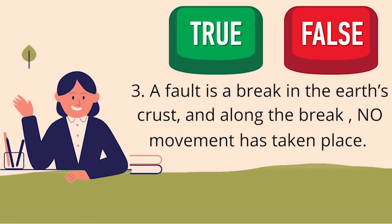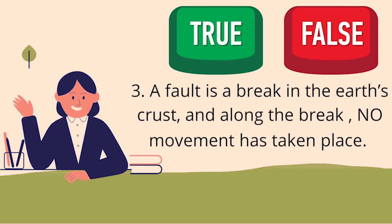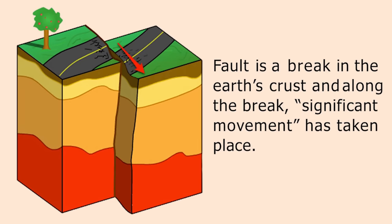Number 3: a fault is a break in the Earth's crust and along the break no movement has taken place. Correct! That is false. A fault is a break in the Earth's crust and along the break significant movement has taken place. But how do faults produce quakes? We will learn that later.